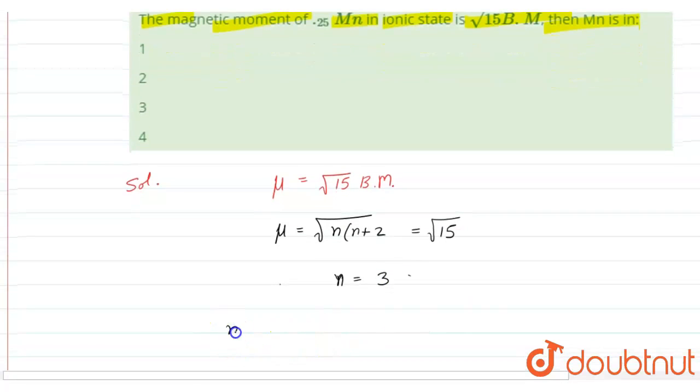Now what is this n? n is the number of unpaired electrons present in the ion.